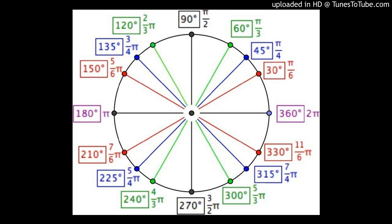Two directed angles are called co-terminal angles if their terminal arms are the same but their measures are different. For example, take an angle of 30 degrees. Every time we talk about an angle, it is a standard angle. Take another angle whose measure is 390 degrees — that is one full complete rotation plus 30 degrees. Or take another angle of minus 330 degrees; it will go clockwise and come back to the first quadrant at the same terminal arm of 30 degrees. So 30°, 390°, and −330° all have the same initial and terminal arm.